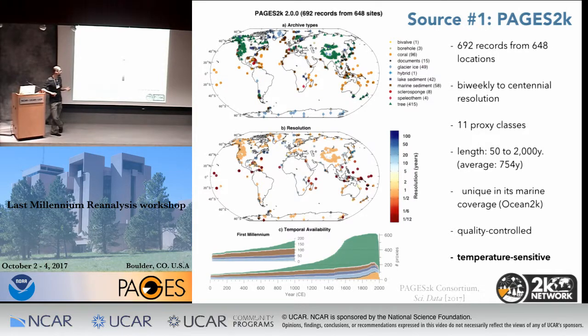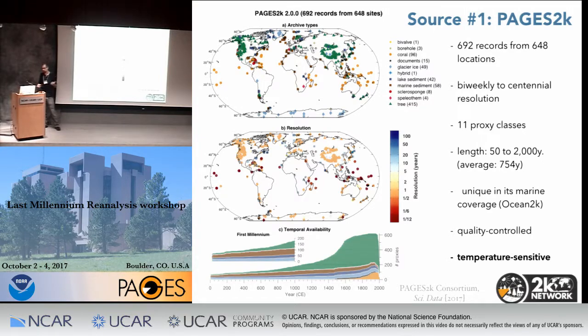One thing that's at least qualitatively important is being able to say whether each record responds positively or negatively to temperature or precipitation. Even if you don't have a quantitative handle on what fraction of variance is accounted for by a particular variable, having a basic quality check of whether we expect this thing to increase or decrease when climate warms — that's pretty important. Pages put a lot of effort into curating that. We're not, at the moment, using all of that metadata as we could be, and that's another area of potential growth.